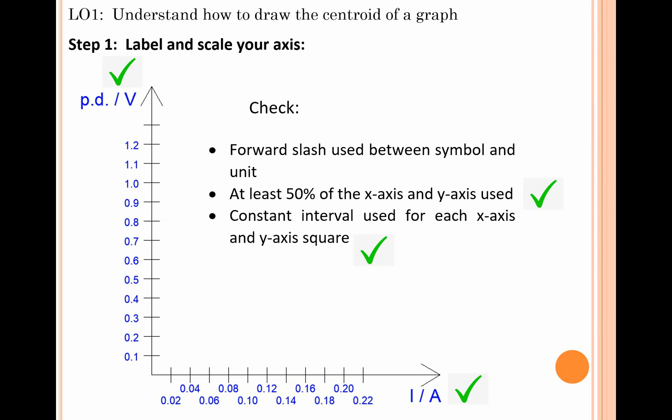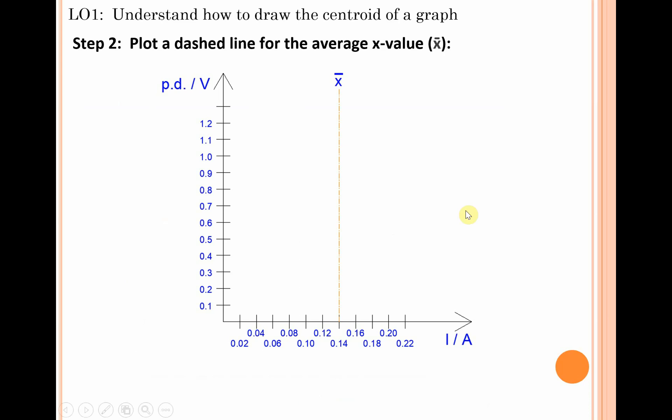The next thing we need to do is put in a dashed line for the average x-value, x̄. Go to the x-axis at the average value - 0.14 amperes - and put a dashed line vertically upwards and label that x̄. The horizontal line on top of the x is used to denote the average and this is called x-bar.